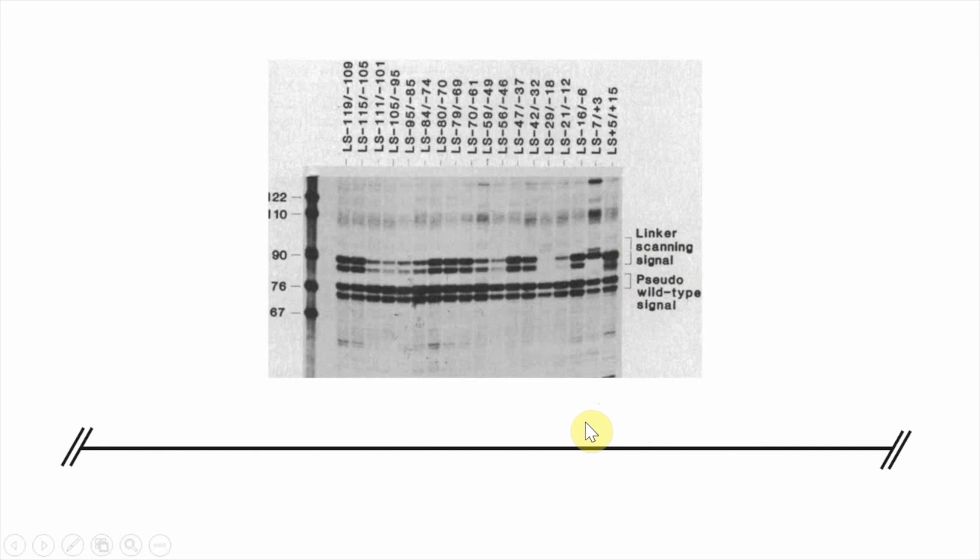Here's the data that actually matters to us. As you can see, there are two bands each in the linker scanning signal and the pseudo-wild type signal, and what this indicates is that there are actually two plus one sites for this mRNA. We're getting one slightly shorter mRNA than the other.